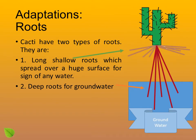Adaptation — roots. Cacti have two types of roots. They have long and shallow roots which spread over a huge surface area searching for any sign of water, and deep roots for accessing ground water.